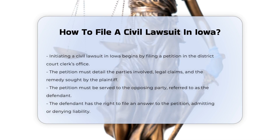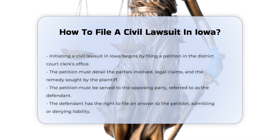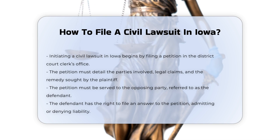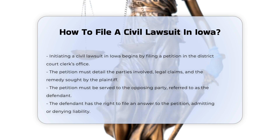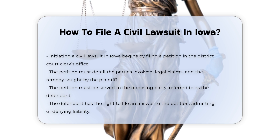Filing the Petition. The process begins with the filing of a petition in the District Court Clerk's Office. This petition must include the parties involved, the legal claims, and the remedies sought by the plaintiff. The petition must be served on the opposing party, known as the defendant.